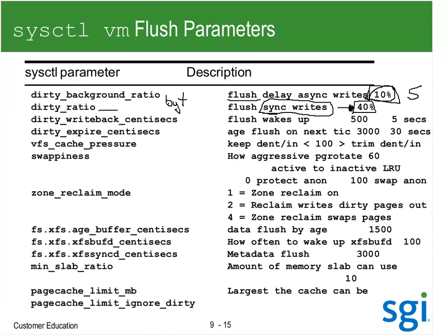I can specify it by bytes instead of percentage. This is that step ladder we were looking at - those steps. This is how often the flush daemon is going to wake up and decide: am I over a certain dirty threshold, do I have anything that's been dirty too long? Every five seconds the flush daemon is going to wake up and sort out what's going on.